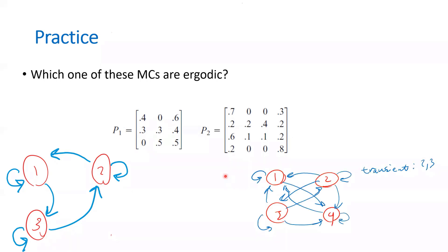For the next chain, states 2 and 3 are transient. From state 2, you can go to 4 or 1; from state 3, you can go to 2, 1, or 4. But once in states 1 or 4, there is no path back to states 2 or 3. This violates the condition for ergodicity. Additionally, not all states communicate — for example, 1 and 3 do not communicate because there is a path from 3 to 1 but no path from 1 to 3.